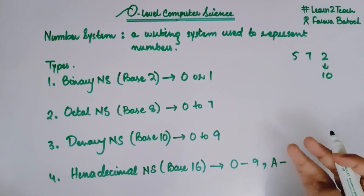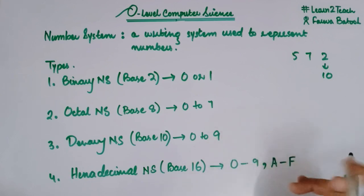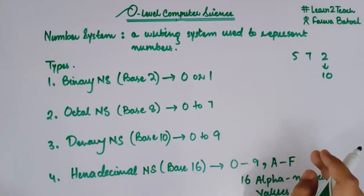So from zero to nine, I am having the numeral use. And from A till A, B, C, D, E, F, these are my six alphabets. So it's a collection of 16 alphanumeric values. These are basically 16 alphanumeric values that are being used in order to represent any number. It is from zero to nine and A to F.